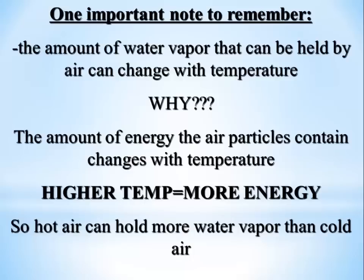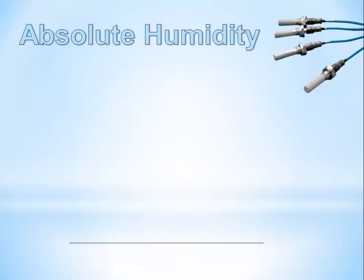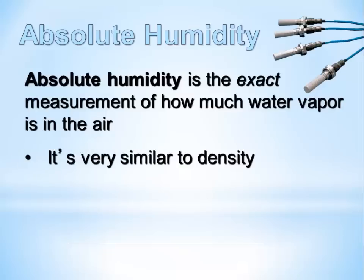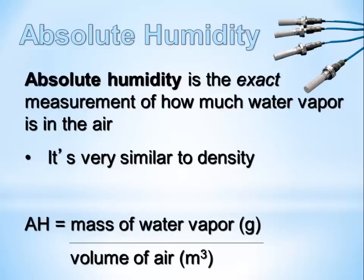We actually have two different types of humidity. The first type is absolute humidity. Absolute humidity is the actual amount of water vapor in the air — it's the exact measurement. We know exactly how much water vapor we have in terms of mass and how much space it takes up. It's very similar to density and concentration — we're looking at the density or concentration of water vapor in the air. Absolute humidity is the mass of water vapor in grams divided by the volume of air.